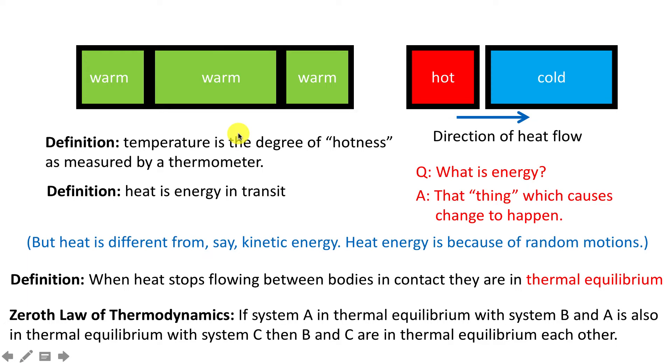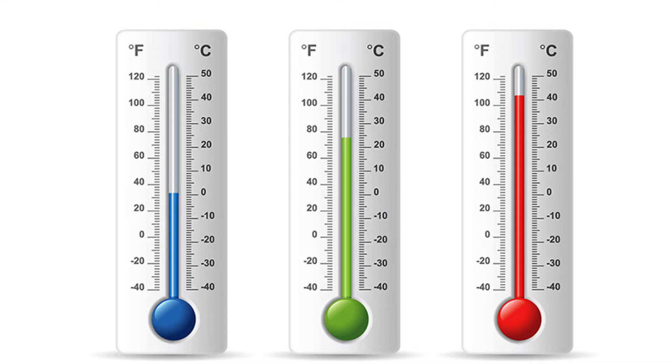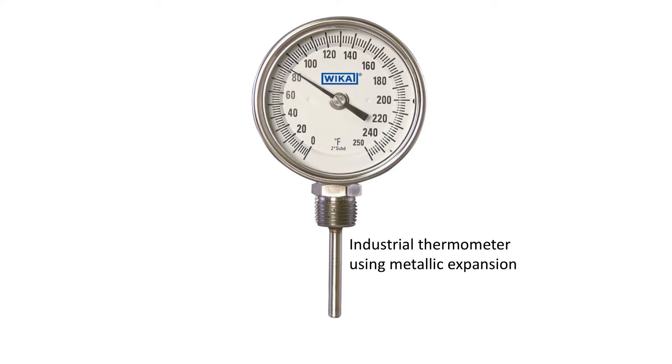The next question is: how do you measure temperature? You could rely on some physical property changing, such as the expansion of a liquid. Here the temperature is less, the expansion is less. With the green it's a bit more, and with the red it's even more. Of course, all thermometers have to agree with each other. Those made by one company or another, or those using different materials, all have to agree—they have to be calibrated. Here's another example: an industrial thermometer that uses metallic expansion instead of liquid expansion. Here's a different kind that uses radiation from a hot body.